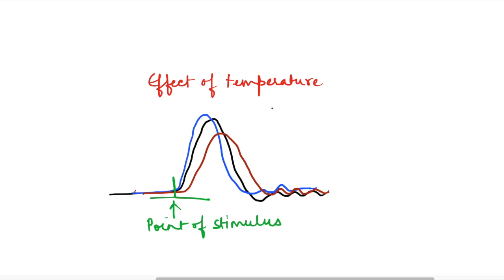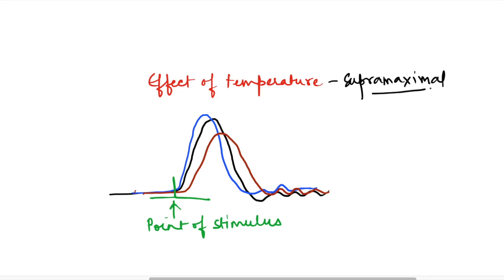This graph shows records obtained when different temperatures were maintained around a nerve-muscle preparation and the nerve was stimulated, and a simple muscle twitch was recorded. The strength of stimulus used has to be supramaximal, as explained in the video on recruitment of motor units — we must use supramaximal strength to record the effect of any intervention on simple muscle twitch. The link is given in the description below.